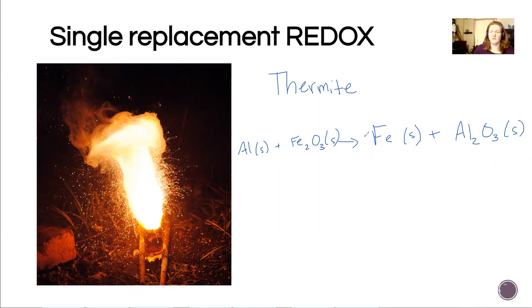So we need to have the process is going to be we're going to put two iron here. I need two aluminum, so I'll put a two there. That means I have two of each metal on both sides, and then I have three oxygen. So that's how we're going to balance this guy.